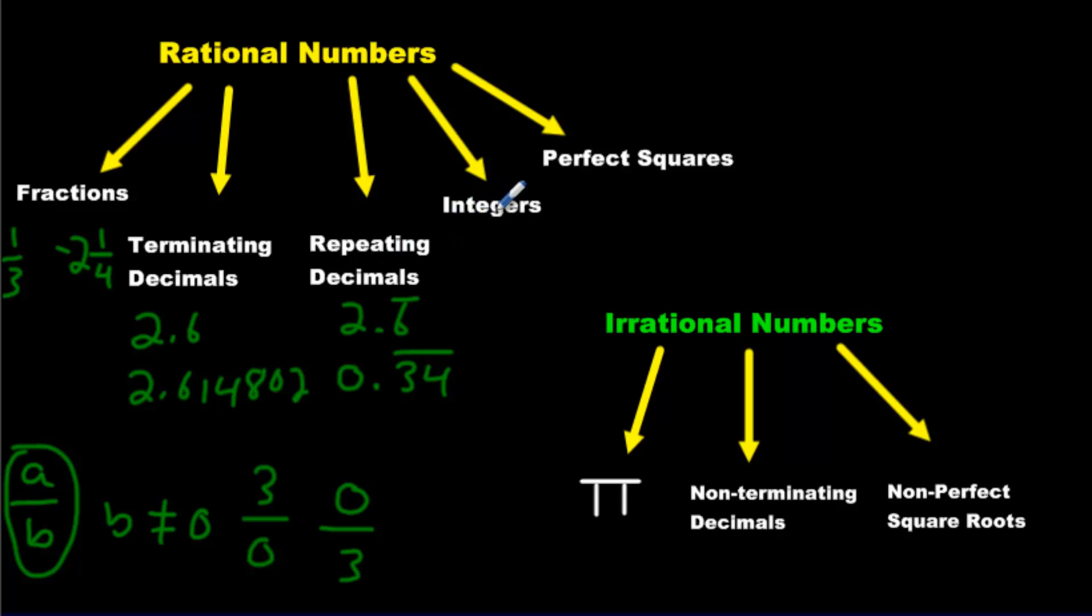Moving on, we have integers. They are also rational expressions. All of them are. For instance, negative 2. We have positive 4. Those are two examples of integers. An integer is essentially any number that does not contain a fraction or a decimal in visible format.